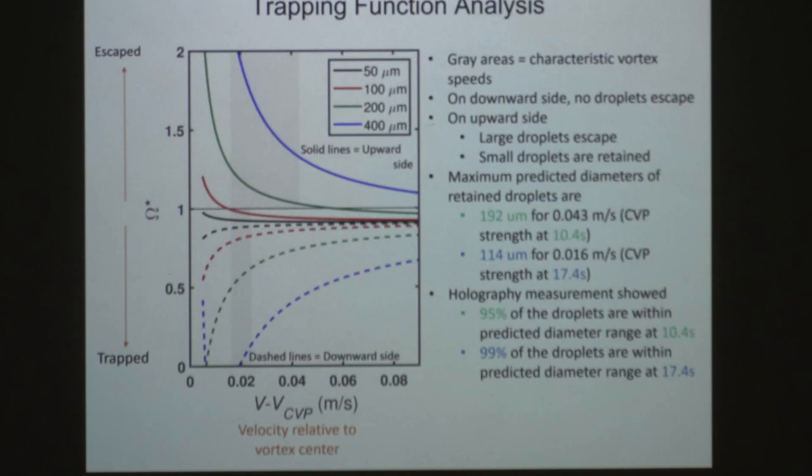The holography measurements showed that 95% of the droplets are within the predicted diameter range at the earlier time point, and then 99% of the droplets are within the predicted range at the later time point.